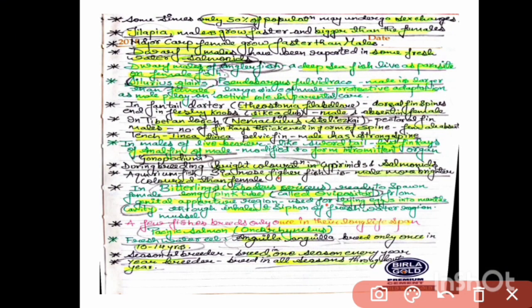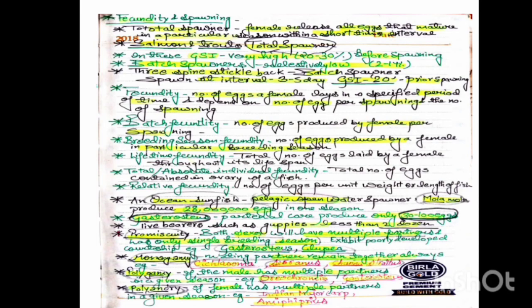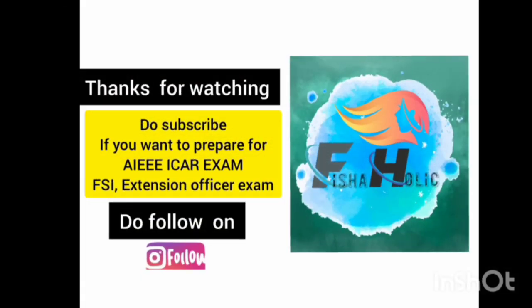Individual fecundity and relative fecundity refers to the number of eggs per unit weight or length of fish. An ocean sunfish, the pelagic open-water spawner Mola mola, produces about 28 lakh eggs in one season. In contrast, the gasterosteid with parental care produces only 30 to 100 eggs. Guys, here I am ending this first note on breeding and hatching management of finfish and shellfish — we will continue in the next videos.